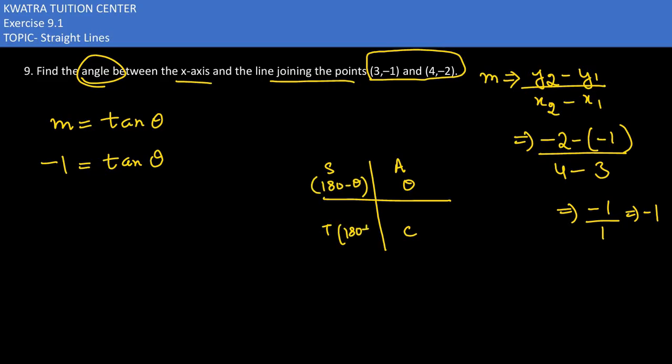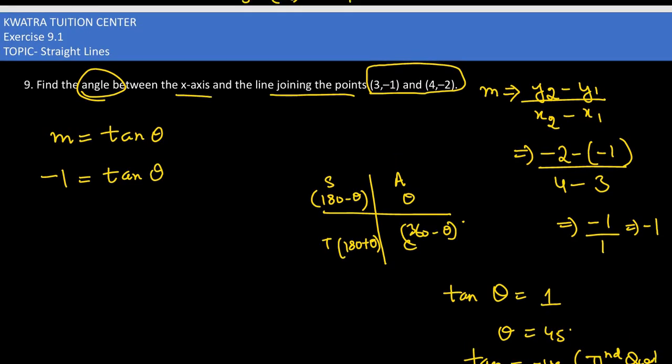So minus 1, how can we replace them here? I know that tan theta is 1 at 45 degrees. So use this, because I know tan which is negative, it's negative at the second quadrant. We use this formula.